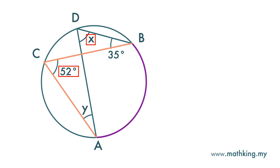This line rises from A, touches point D, and then back to point B. Since they are subtended by the same arc, they are equal. So angle x is also 52 degrees.